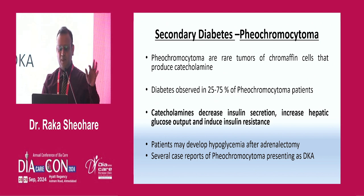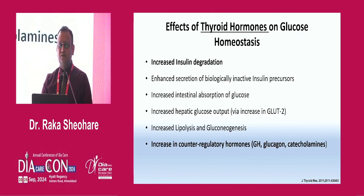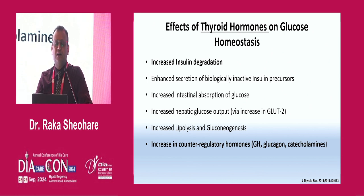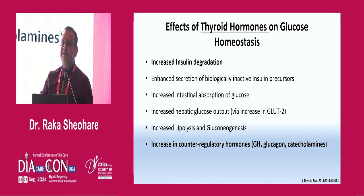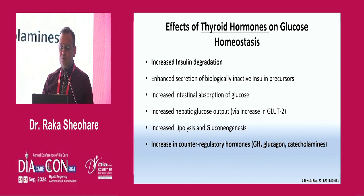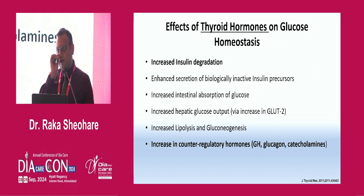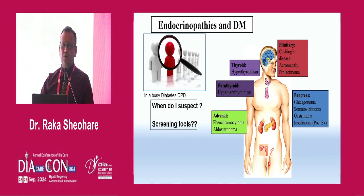Pheochromocytomas are rare chromaffin cell tumors with high catecholamine levels. Twenty-five to seventy-five percent of pheochromocytoma patients have diabetes. These patients sometimes present with diabetic ketoacidosis — they are brittle patients. Catecholamine excess increases insulin degradation. Regarding hyperthyroidism: thyroid hormone degrades insulin rapidly, so whatever insulin production exists is degraded and not usable. This leads to enhanced secretion of biologically inactive insulin precursors, increased intestinal absorption of glucose, increased hepatic glucose output via GLUT2, increased lipolysis, gluconeogenesis, and increased counter-regulatory hormones including glucagon and catecholamines.